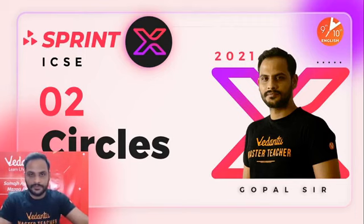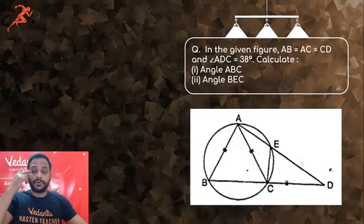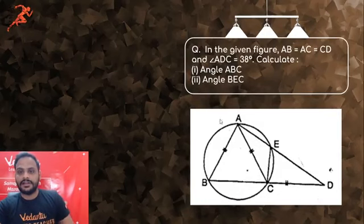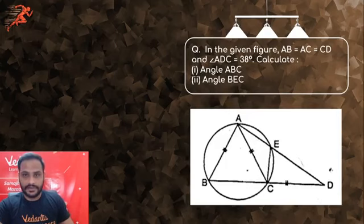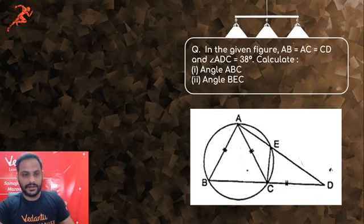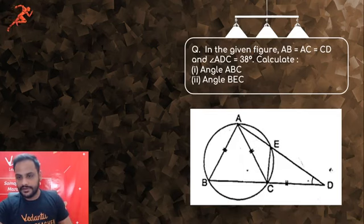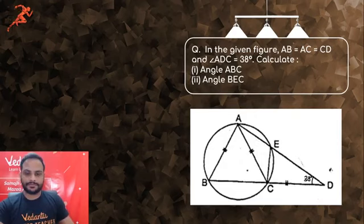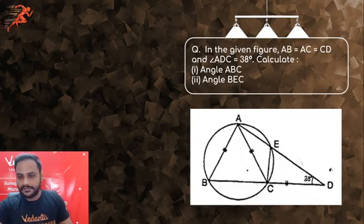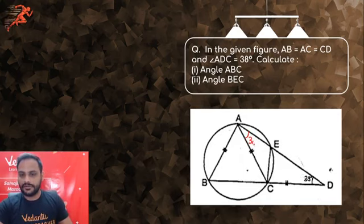This was the homework question from the last class: if AB = AC = CD and angle ADC = 38°, calculate angle ABC and angle BEC. Angle ADC is given as 38°. Since AC and CD are equal, triangle ACD is isosceles. So angle CAD is also equal to 38°.